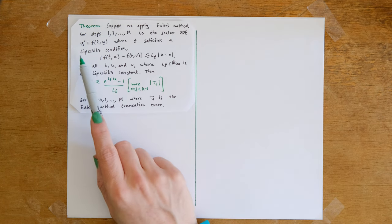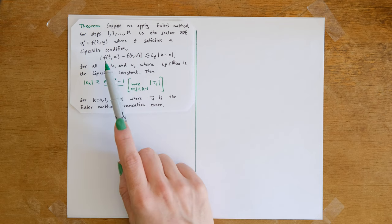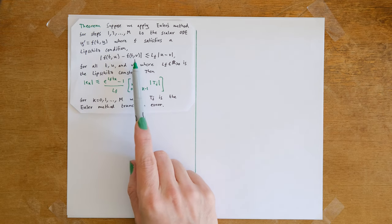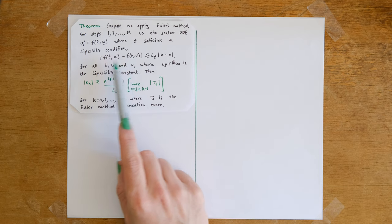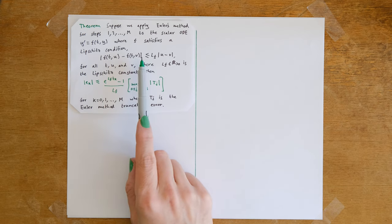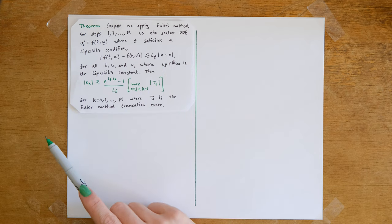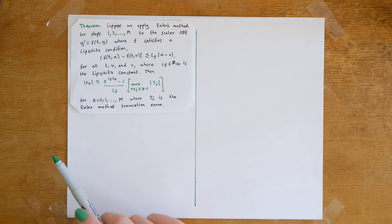Before proving this result, let's look in more detail at the Lipschitz condition. The reason it's important is that it tells us that if we sample our function at two nearby values u and v, then it allows us to bound the difference in the function evaluation in terms of the distance between u and v. This will be very important in the subsequent proof.